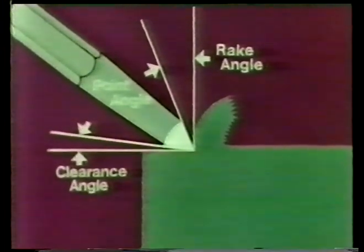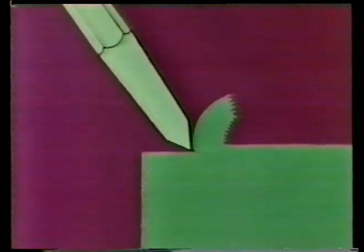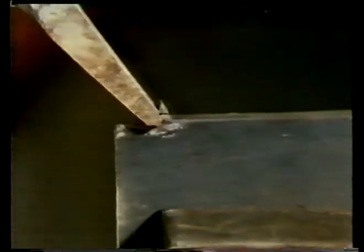Both the rake and clearance angles here are dependent on the angle at which the chisel is held. If the chisel is held at too low an angle, we get a shallow cut. What happens if the chisel is held at too steep an angle? The chisel is digging deeper and deeper down into the work.